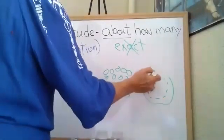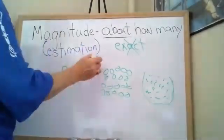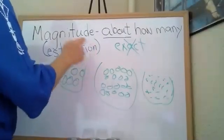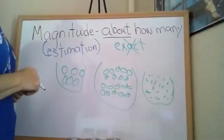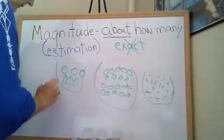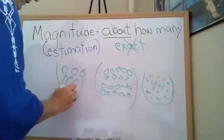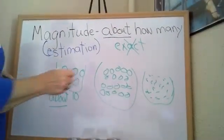Here's my first jar. I want to know about how many is in here. Well if I'm not going to count these, I would think that these had about 10. Remember we always have to use the word about when we are talking about estimation.